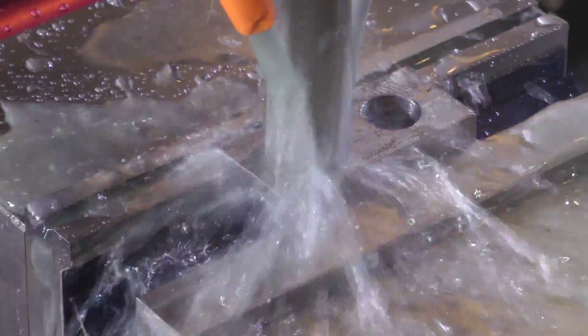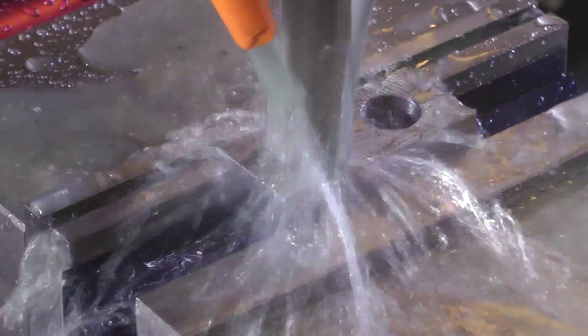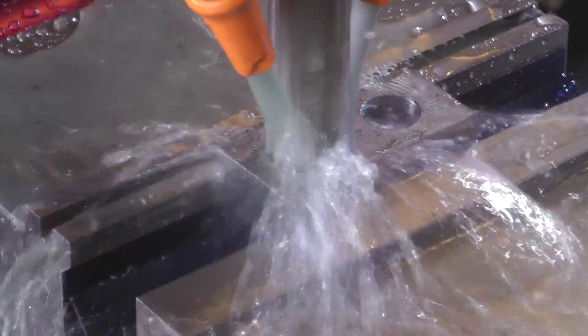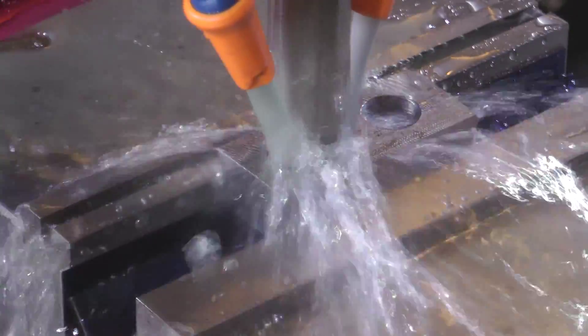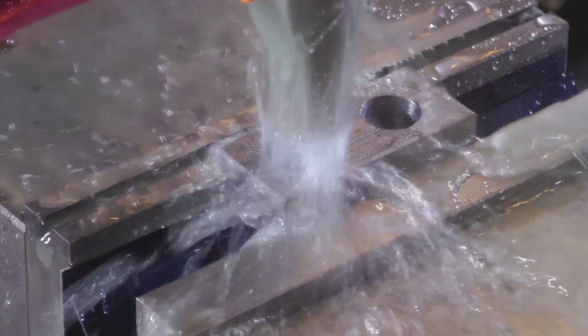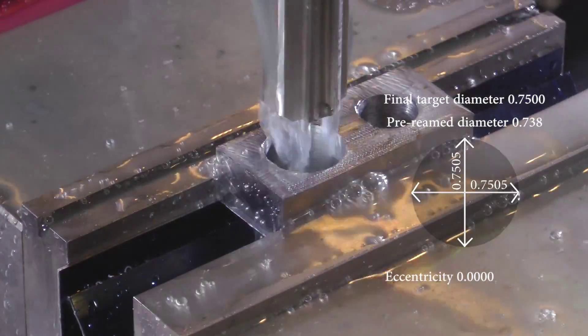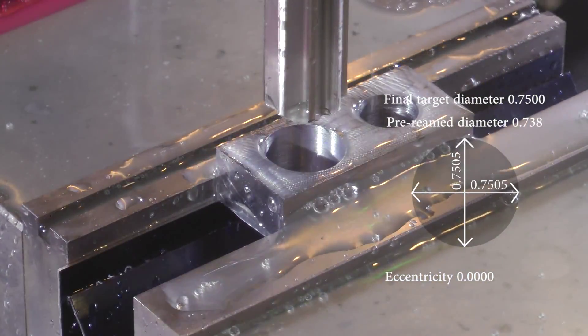So here we go, 350 RPM, 4.2 inches a minute. Those are numbers from G-Wizard. And bang, there it is, zero eccentricity.